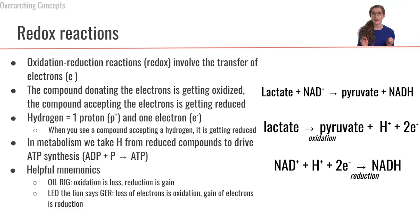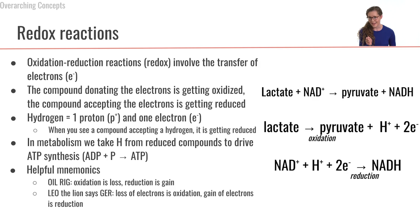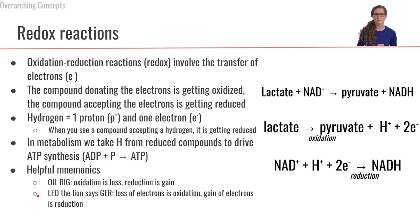There are a few helpful mnemonics to remember the components of a redox reaction. One is OIL RIG: Oxidation Is Loss (of electrons), Reduction Is Gain (of electrons). Another mnemonic is 'Leo the lion says GR': Loss of Electrons is Oxidation, Gain of Electrons is Reduction.